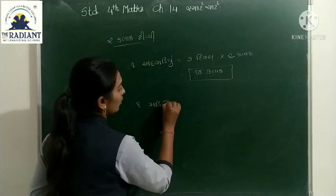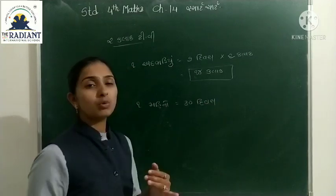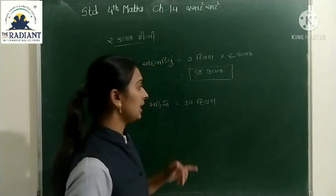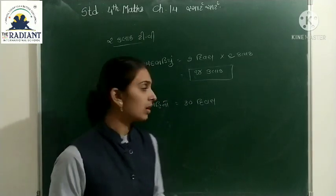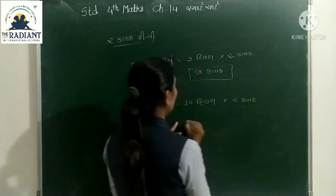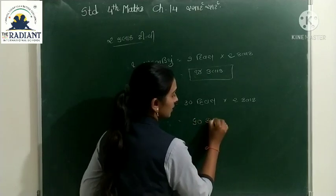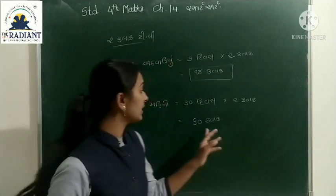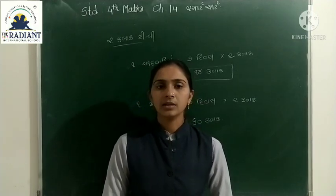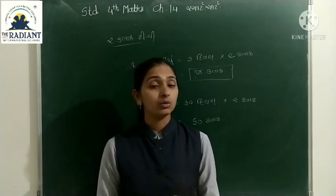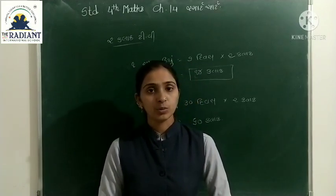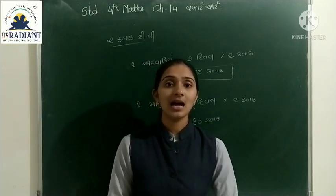One month equals 30 days. So 30 multiplied by 2 hours equals 60 hours. We spend 60 hours in one month watching TV. Similarly, you can calculate how many hours per day you watch TV and prepare your own table.